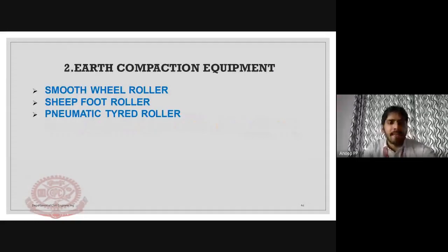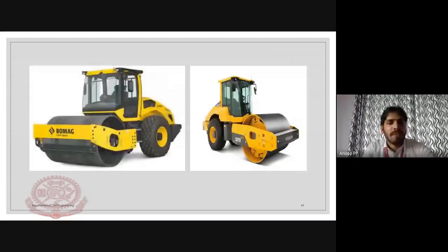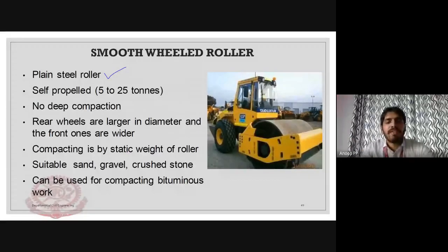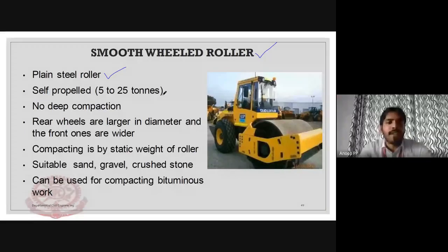Rollers can be categorized into three types: smooth wheel roller, sheep foot roller, and pneumatic tired roller. The smooth wheel roller, also known as the smooth wheeled roller, consists of plain steel rollers used for compaction. Compaction is the process of removing air from soil or concrete. It has a weight of five to twenty-five tons, but deep compaction cannot be done using the smooth wheel roller.